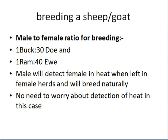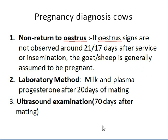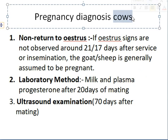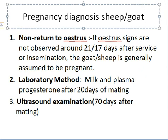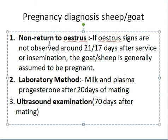For pregnancy diagnosis, the first method is non-return to estrus: after 21 days in goat or 17 days in sheep, if the animal does not come into heat again we presume she is pregnant. A laboratory method involves testing milk and plasma progesterone levels after 20 days of mating. Ultrasound examination can also be done after 70 days of mating to confirm pregnancy.